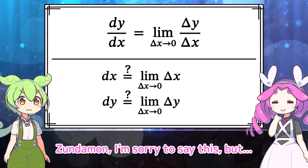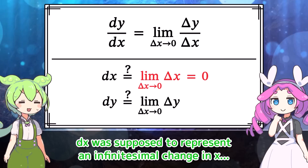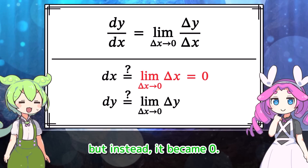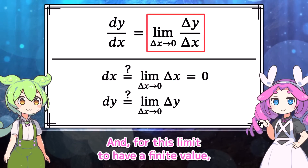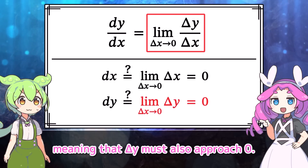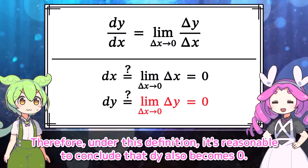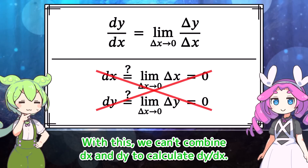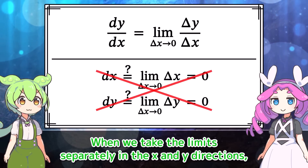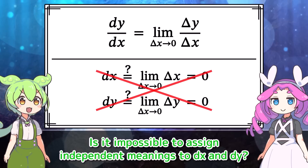I'm sorry to say this, but if we let delta x approach 0, then the limit of delta x is 0. dx was supposed to represent an infinitesimal change in x, but instead it became 0. And for this limit to have a finite value, the numerator must approach 0 as the denominator approaches 0, meaning that delta y must also approach 0. Therefore, under this definition, it's reasonable to conclude that dy also becomes 0. With this, we can't combine dx and dy to calculate dy by dx. When we take the limits separately in the x and y directions, some information is lost. Is it impossible to assign independent meanings to dx and dy?